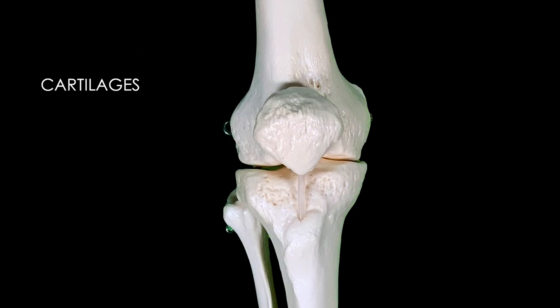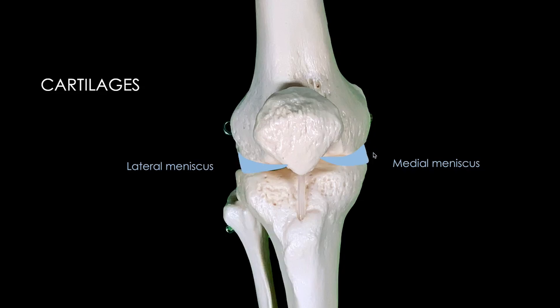Now let us talk about the cartilages, also known as the menisci. These are discs present within the joint. Looking from the lateral side, we can see the lateral meniscus and the medial meniscus. These are crescent-shaped fibrocartilage discs that in cross-section look like a wedge, and that shape is helpful for the stability of the joint. They also act as a shock-absorbing mechanism, playing a significant role in absorbing forces occurring at the knee joint.